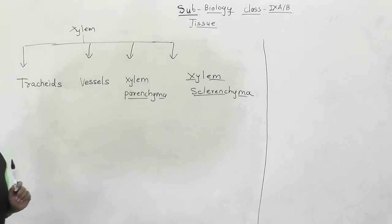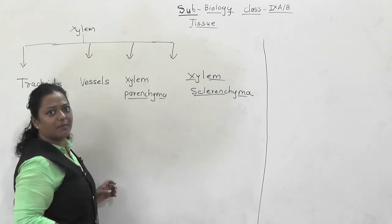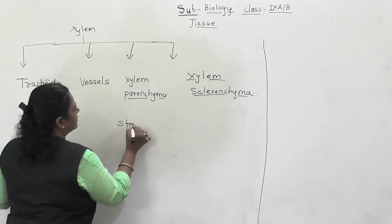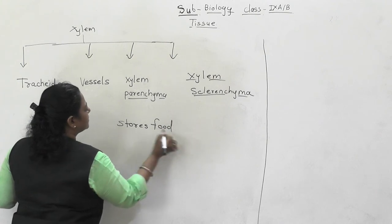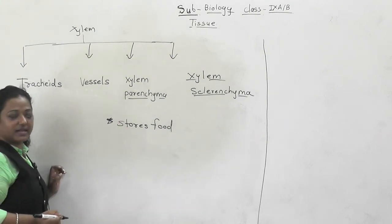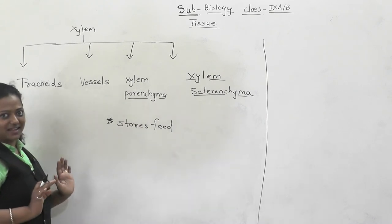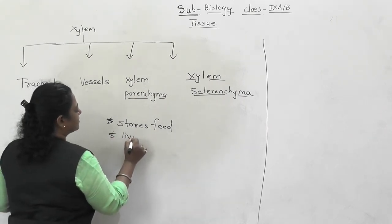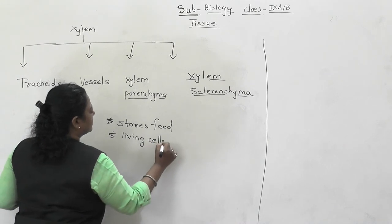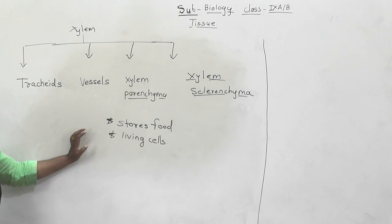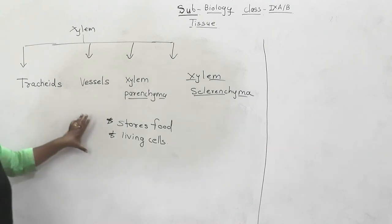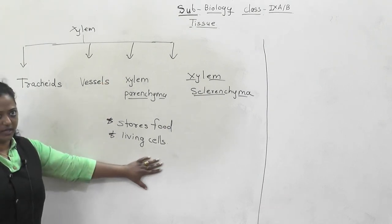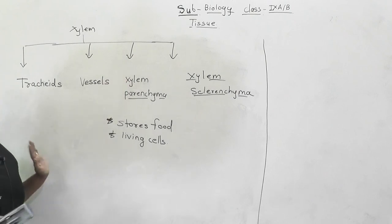Now, xylem parenchyma - what is its function? Xylem parenchyma actually stores food. Very interestingly, xylem parenchyma consists of living cells. Tracheids and vessels are dead cells, but xylem parenchyma contains living cells. Xylem parenchyma supports by storing food, and this is the only function of xylem parenchyma.